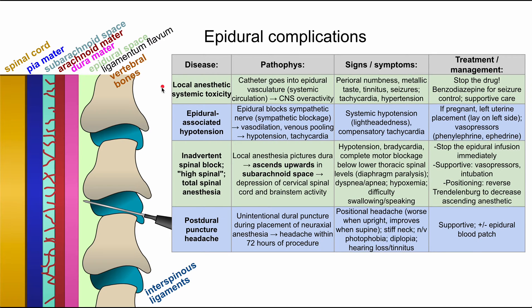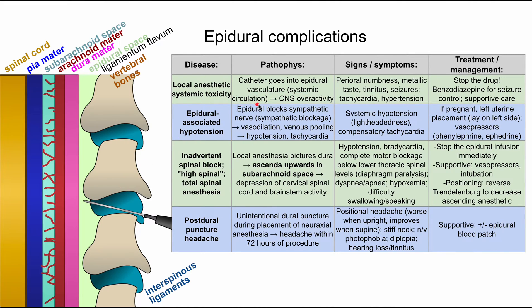First, we have local anesthetic systemic toxicity. The pathophysiology here is that the catheter goes into the epidural vasculature — blood vessels around that area — meaning the drugs end up in the systemic circulation.